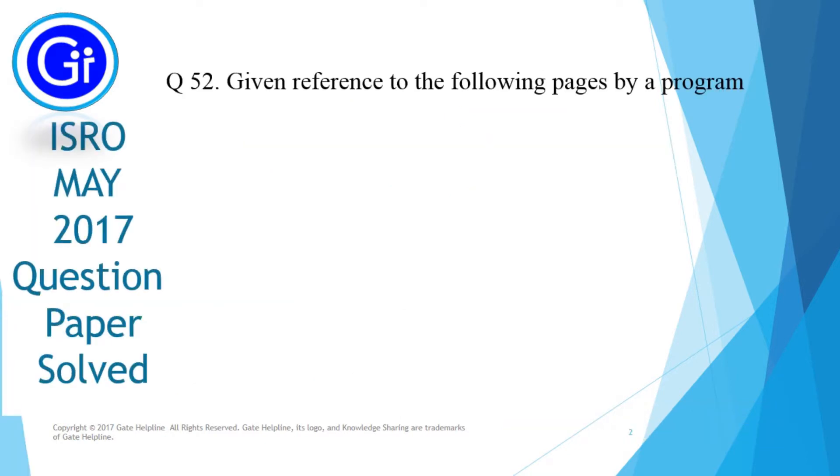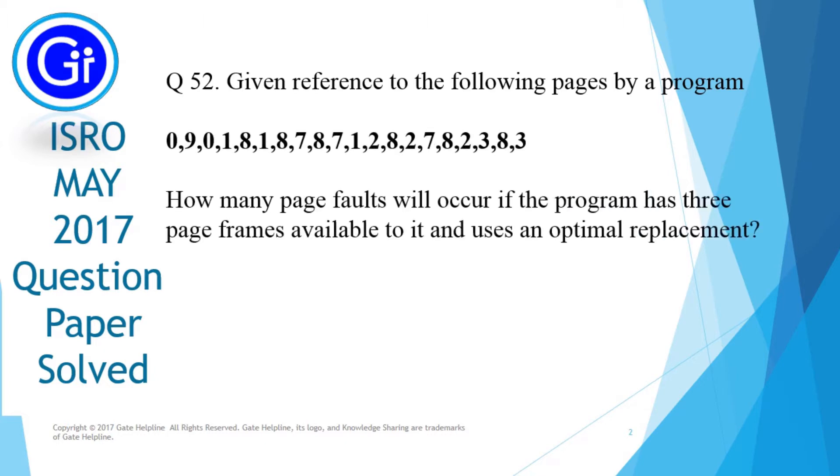Question number 52 is given reference to the following pages by a program 0,9,0,1,8,1,8,7,8,7,1,2,8,2,7,8,2,3,8,3. How many page faults will occur if the program has three page frames available to it and uses an optimal replacement?